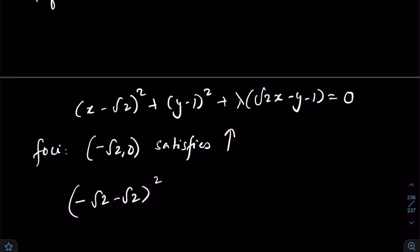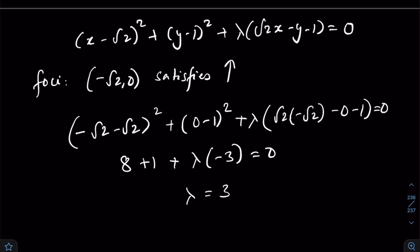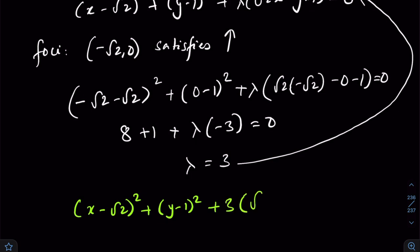Substituting (−√2, 0): (−√2 − √2)² + (0 − 1)² + λ(√2·(−√2) − 0 − 1) = 0, giving (−2√2)² + 1 + λ(−2 − 1) = 0, so 8 + 1 − 3λ = 0, giving λ = 3. The second circle equation is: (x − √2)² + (y − 1)² + 3(√2·x − y − 1) = 0.